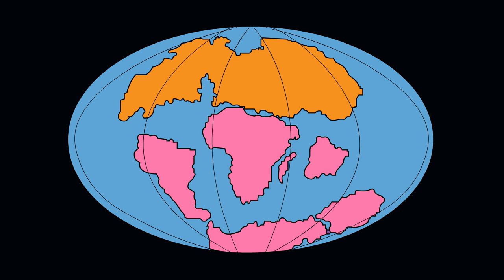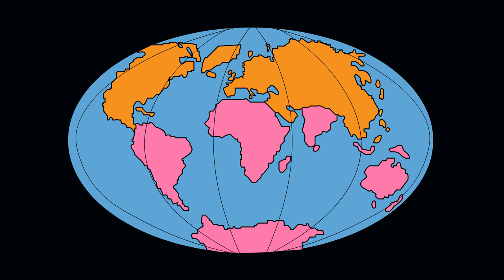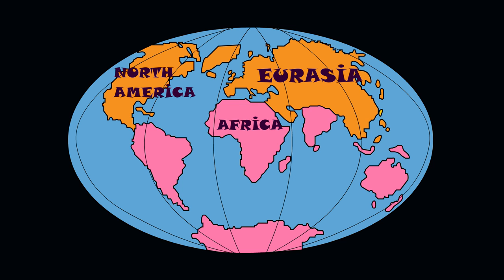Later, the northern continent Laurasia split into Eurasia and North America. While the southern continent Gondwana formed Africa, South America, India, Australia, and Antarctica.